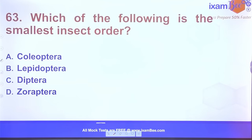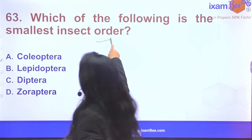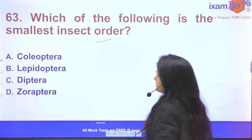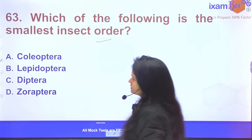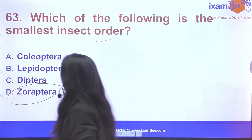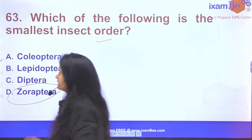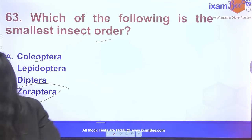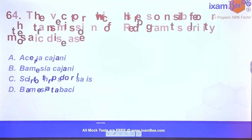Question 63: The smallest insect order is Strepsiptera (Zoroptera). The largest insect order is Coleoptera.